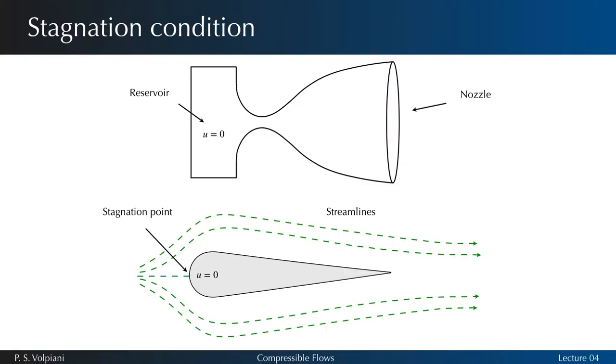Consider a moving fluid that is decelerated isentropically to reach zero speed. This is the case of a gas at rest contained in a high-pressure reservoir. This also happens at the leading edge of an airfoil.